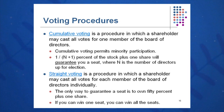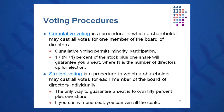A newer model is cumulative voting, where you can vote all your votes for one member of the board of directors if you want to, and all the directors are elected at once. You need one-over-N-plus-one percent, plus one share, to guarantee yourself a seat on the board of directors.